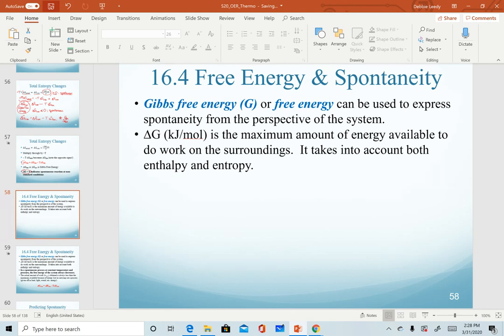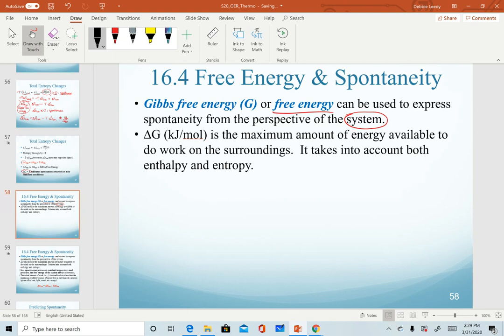Our definition of Gibbs free energy: it is sometimes just referred to as free energy, so those terms can be used interchangeably. It is a quantity used to express spontaneity from the perspective of the system or of the reaction. Delta G is measured in units of kilojoules per mole and is defined as the maximum amount of energy that is available to do work on the surroundings. To calculate it, we have to take into account both the enthalpy and the entropy of a system.